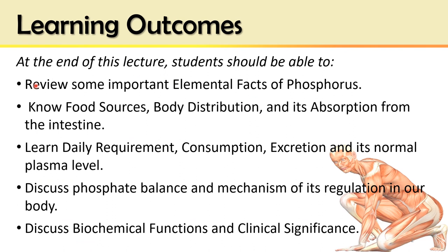Learning Outcomes: To review some important elemental effects of phosphorus, know food sources, body distribution, and its absorption from the intestine. To learn daily requirement, consumption, excretion, and its normal plasma level. We will discuss the phosphate balance and mechanism of its regulation in our body, and also discuss the biochemical functions and clinical significance of phosphorus.